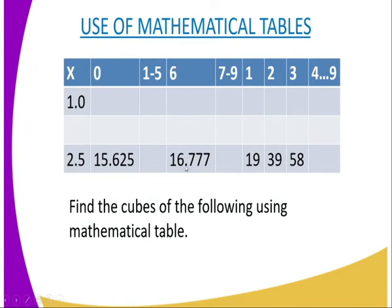You read the number, you drop up to where the column of 2.5, where it coincides with the row of 2.5, where it coincides with 6. And the answer becomes 16.777.